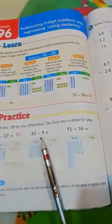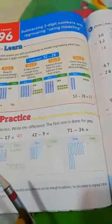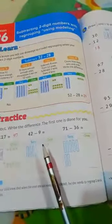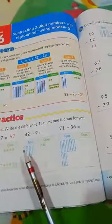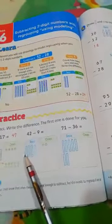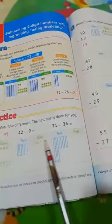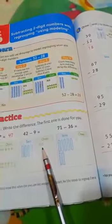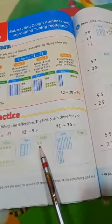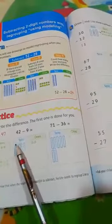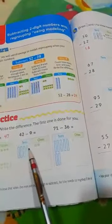Another example: 42 minus 9. Let's count: 1, 2. 10, 20, 30, 40. I will represent ones by using small cubes and I will represent tens by using sticks.